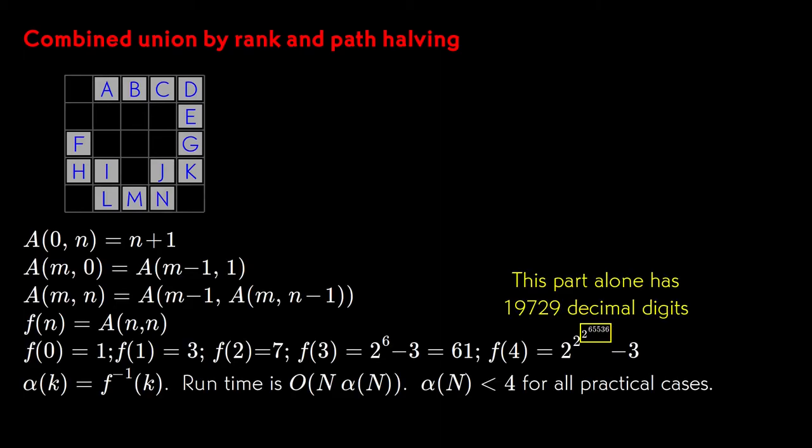But it's almost magical. The performance actually improves to N alpha of N, where alpha is the inverse of Ackermann's function. Ackermann's function is renowned for its depth of recursion and its explosive growth. It grows faster than any tower of exponentials. The inverse function therefore grows more slowly than log N, log log N, or indeed any iterated logarithm. To write the number N of nodes required for alpha of N to be greater than 4, one would need more digits than there are thought to be elementary particles in the observable universe. To all intents and purposes, it's a constant.